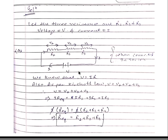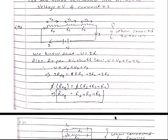As per Ohm's Law, V is equal to IR. Applying Kirchhoff's Voltage Law in this loop, we get V is equal to V1 plus V2 plus V3. We can write V is equal to I times R_equivalent, where R_equivalent is the total resistance. V1 equals IR1, V2 equals IR2, and V3 equals IR3. Taking I common from all terms, I cancels from both sides and we get R_equivalent is equal to R1 plus R2 plus R3. This is the formula for resistances connected in series.